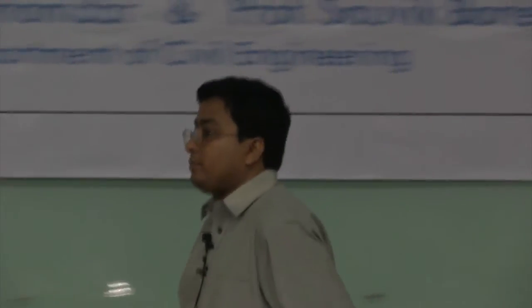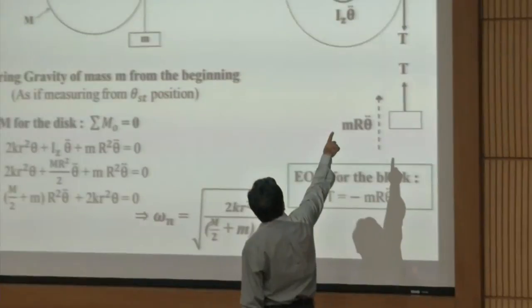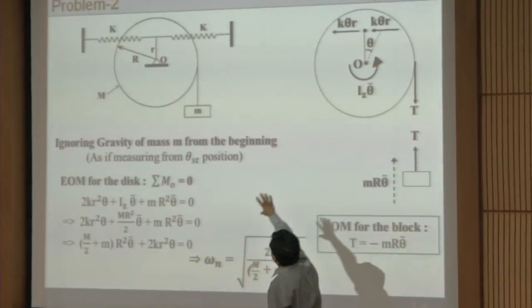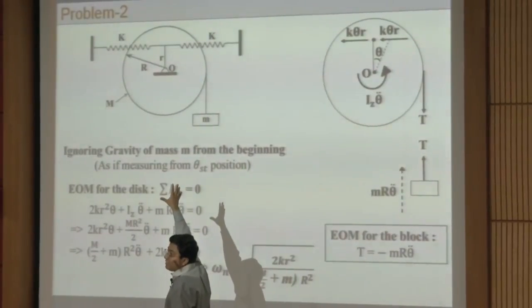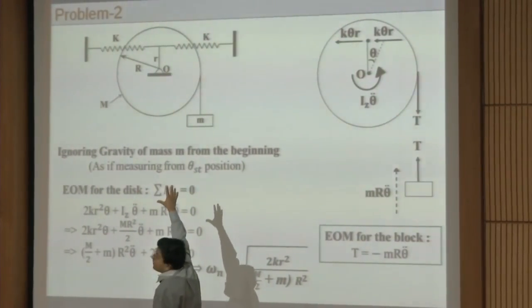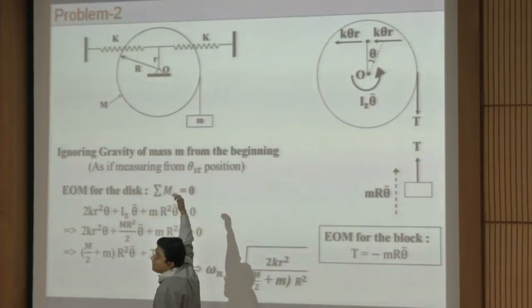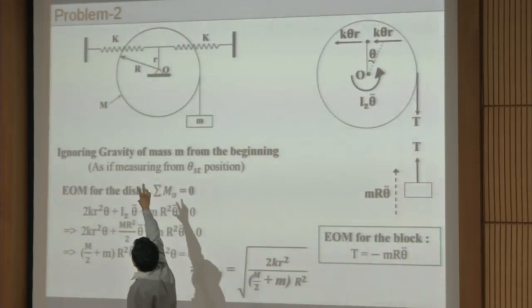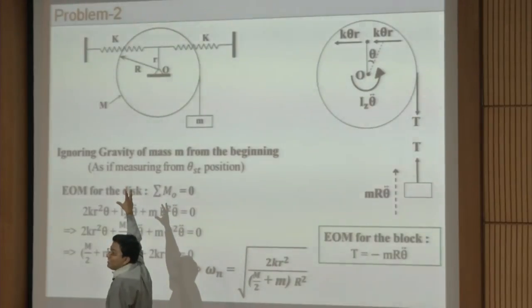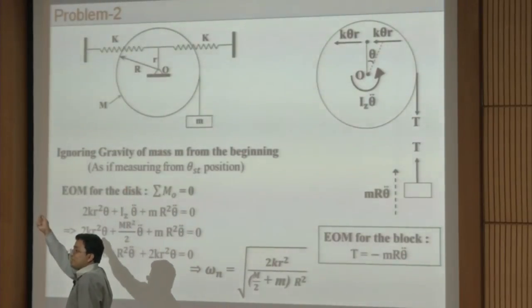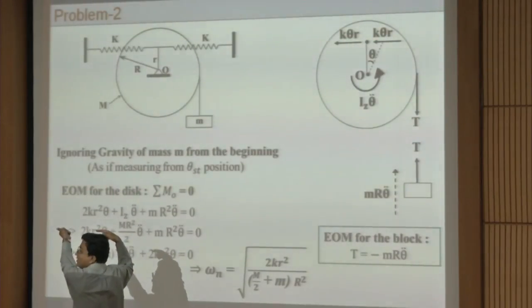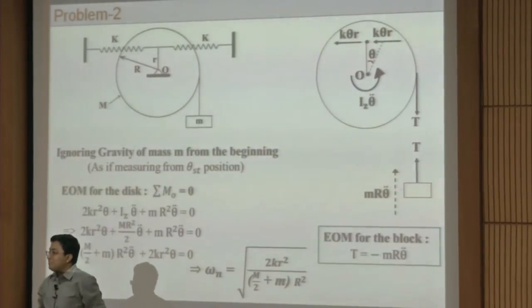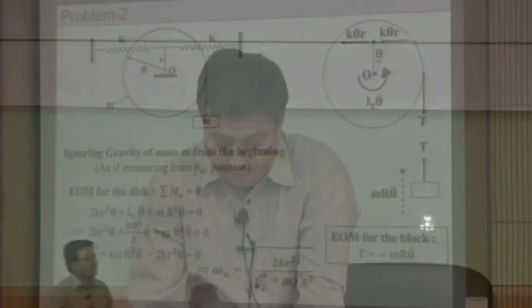Are both spring forces towards the same direction? If you rotate it clockwise, one spring is compressed and the other is under tension. The compressed spring pushes back, and the tensile spring pulls. So ultimately both forces act in the same direction.